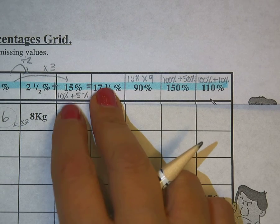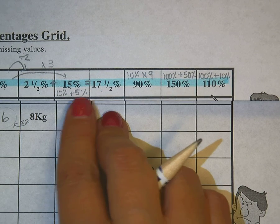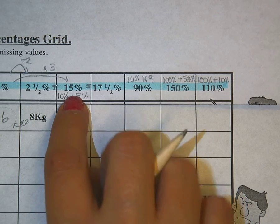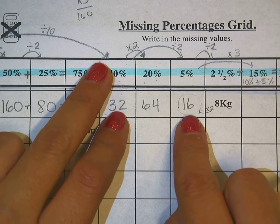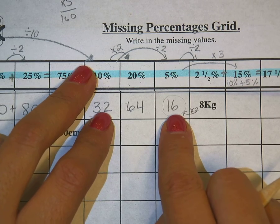These are the ones here at the end. So 15%. I can take my 10% value and add my 5% value to it. So here's my 10% and here's my 5%. That's 48. 48 is my 15%.